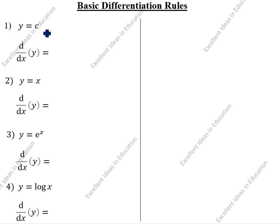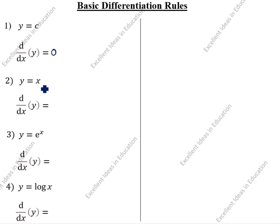Now we will see the basic differentiation formulas. We will see 12 formulas. First formula: y = c. What is the differentiation of c? c is a constant, so the differentiation is 0. Second formula: y = x. The differentiation of x is 1.